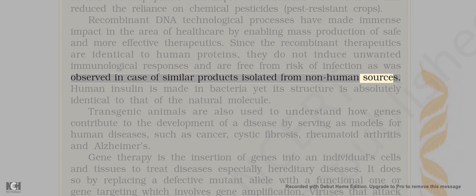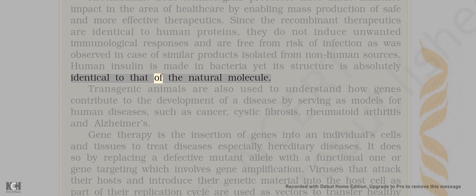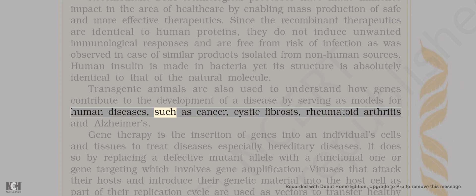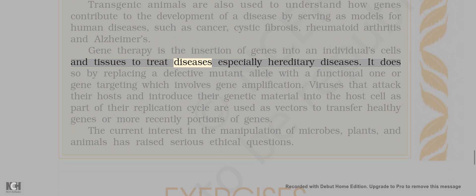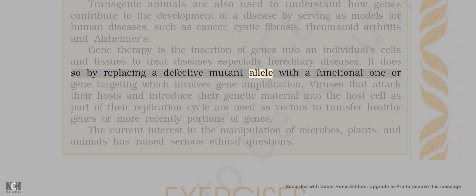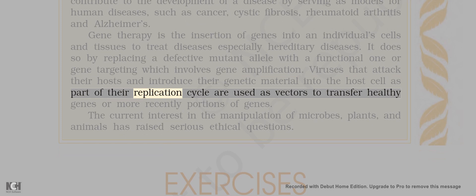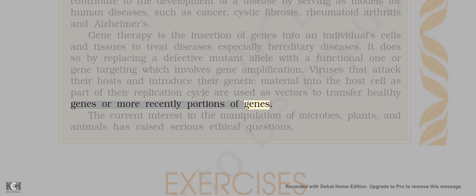Human insulin is made in bacteria yet its structure is absolutely identical to that of the natural molecule. Transgenic animals are also used to understand how genes contribute to the development of disease by serving as models for human diseases such as cancer, cystic fibrosis, rheumatoid arthritis, and Alzheimer's. Gene therapy is the insertion of genes into an individual's cells and tissues to treat diseases, especially hereditary diseases, by replacing a defective mutant allele with a functional one. Viruses that introduce their genetic material into the host cell are used as vectors to transfer healthy genes. The current interest in manipulation of microbes, plants, and animals has raised serious ethical questions.